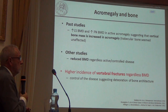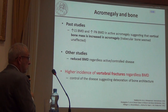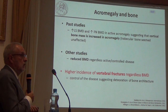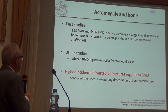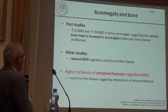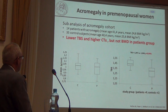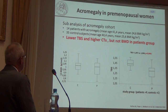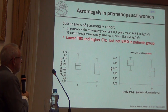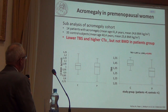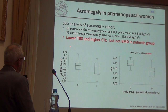In acromegaly — excess growth hormone — BMD is typically higher, yet fracture incidence is high despite elevated bone mineral density. In a study of more than 150 acromegaly patients, the premenopausal subgroup showed lower TBS and higher CTX but not lower BMD, confirming that TBS captures bone quality impairment that BMD misses in this population.